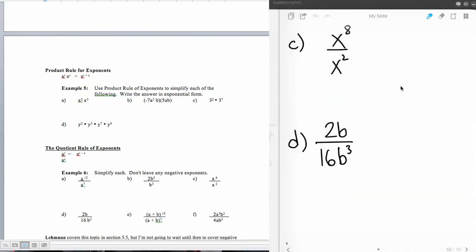The next one, same thing we have in part C here. Copy the like base, numerator minus denominator power, x to the sixth.